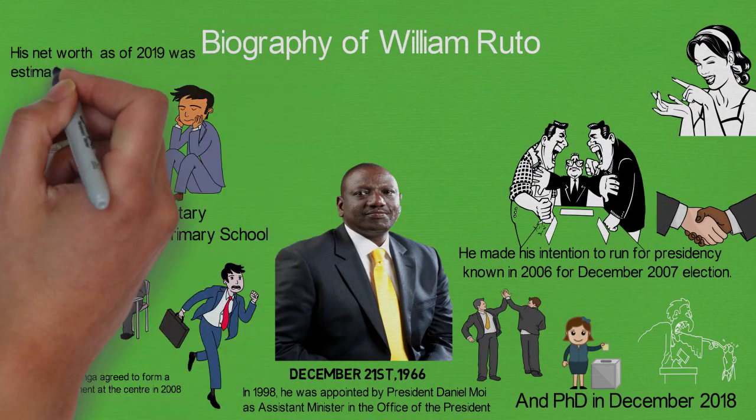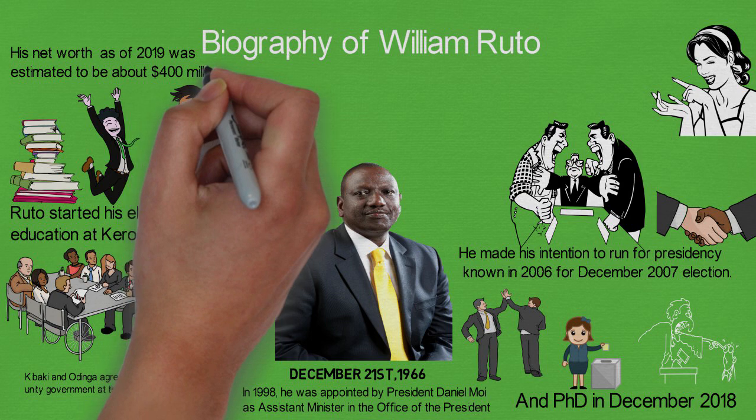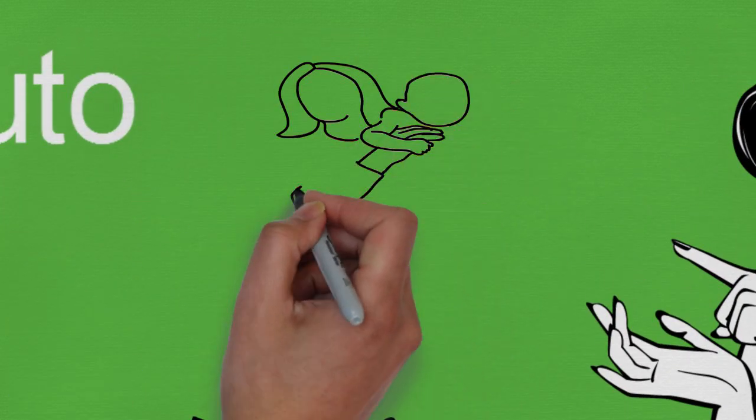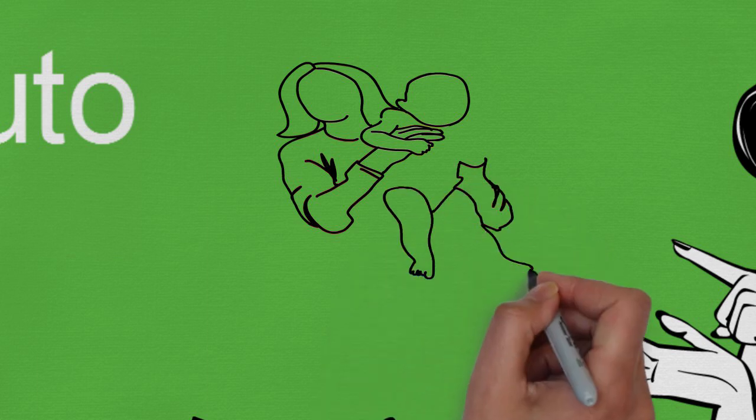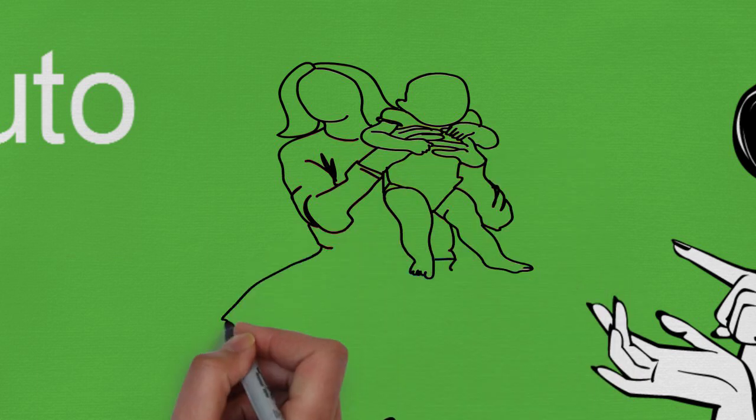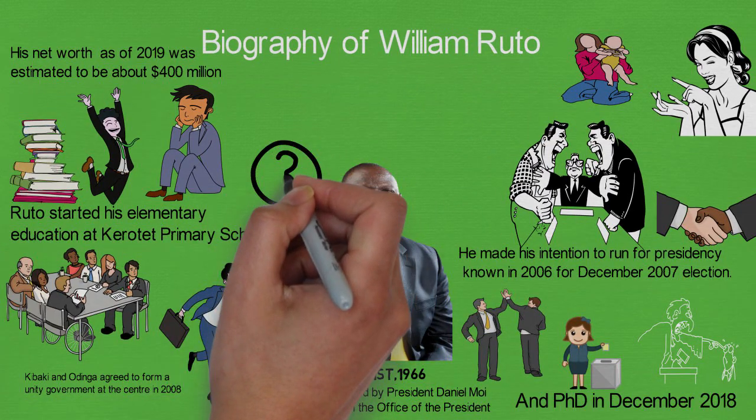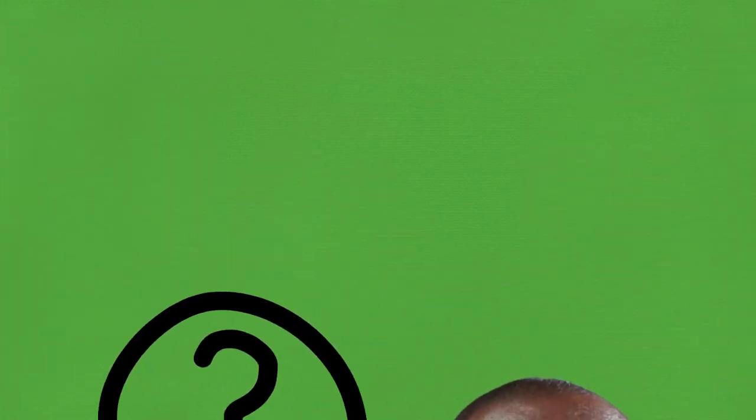His net worth, as of 2019, was estimated to be about $400 million. Ruto married Rachel Chebet in 1991. They have six children. But in February 2017, Prisca Chemutai said that Ruto is the father of her daughter Abby, and Ruto accepted. What's your take on Ruto as a Kenyan politician? Let's know in the comment section.